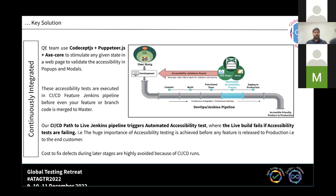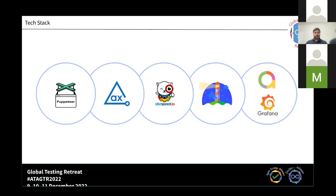The reports cover all violation details and also provide guidelines on where and how to fix each accessibility issue. Moving on to the tech stack — we use different tools and technologies: Puppeteer, axe plugin, sitespeed.io, and Google Lighthouse. For the dashboard, we use Grafana; for reporting, we use Allure Reports, which gives detailed reports to the team. Based on these reports, the team can fix issues accordingly.